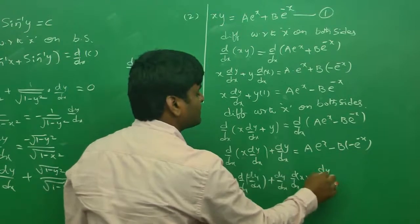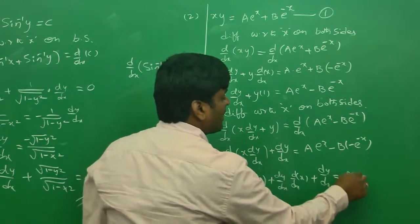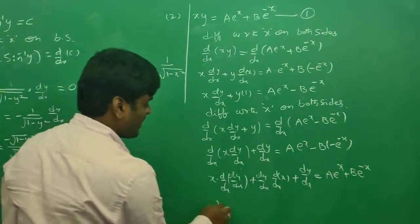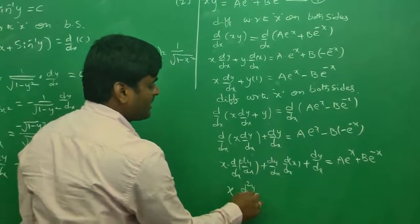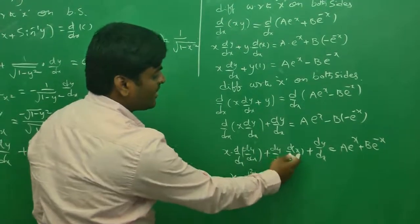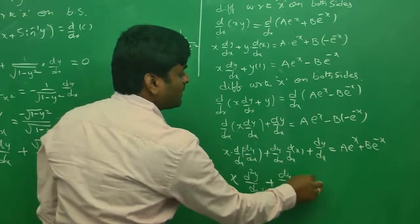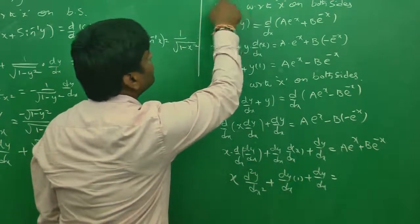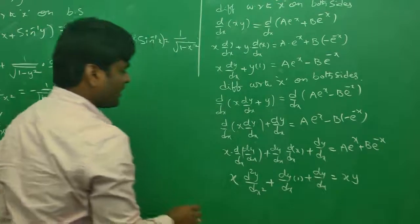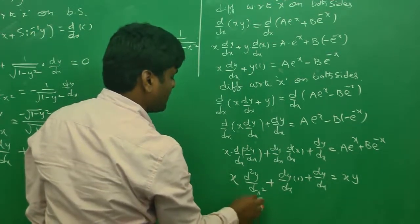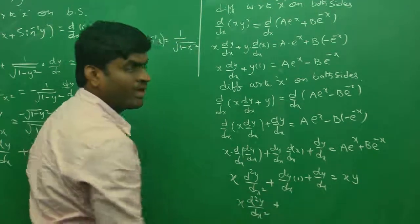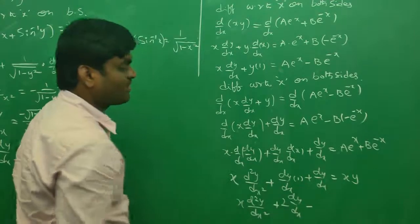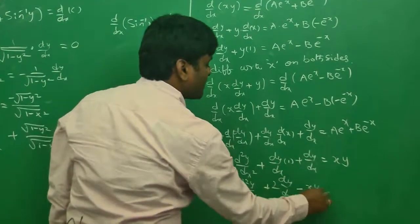Completing the differentiation: x·d²y/dx² + dy/dx + dy/dx = ae^x + be^(−x). Notice that ae^x + be^(−x) equals xy from equation (1). So we get x·d²y/dx² + 2·dy/dx = xy. Taking xy to the left side gives x·d²y/dx² + 2·dy/dx − xy = 0. This is the required differential equation.